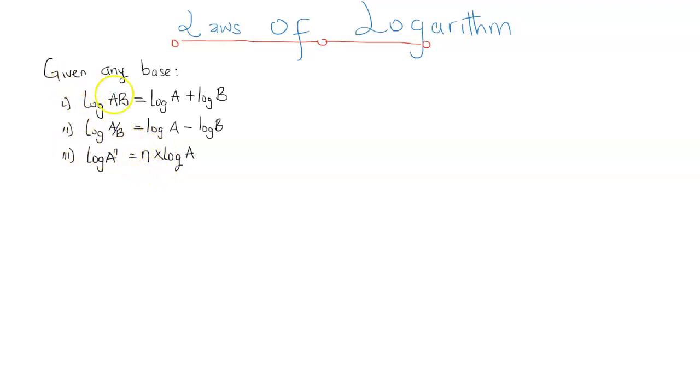Now these are the laws, irrespective of the base. The logarithm of ab is going to be equal to log a plus log b. The second one, log a over b is equal to log a minus log b, and finally log a raised to the power of n is equal to n times log a.